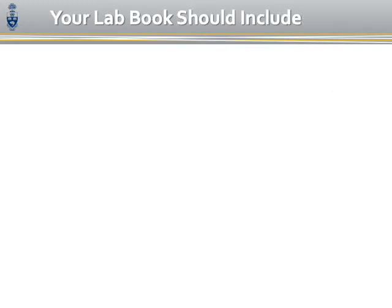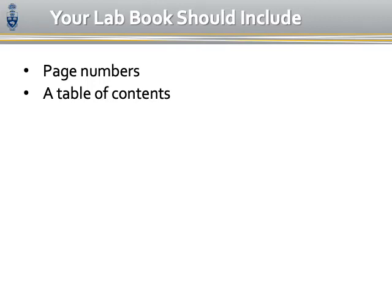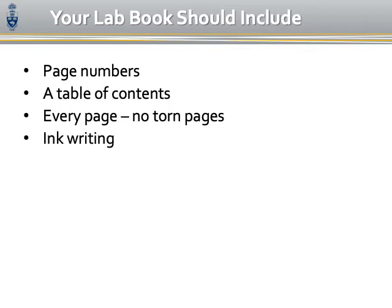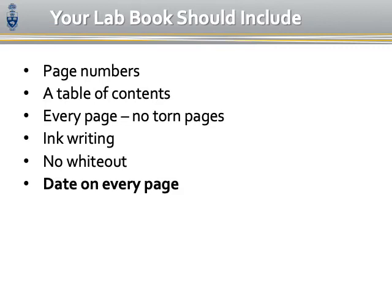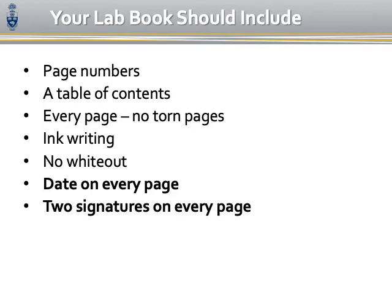What should your lab book include? First, there must be page numbers. If you buy a notebook without page numbers, write a number for every page. Leave a blank page at the beginning for a table of contents, which you can fill as you go. There are no torn or missing pages — every page should be intact. If you make a mistake, put a line through it. It must be written in ink with no white-out. There has to be a date on at least every page. On every page there should be two signatures: your signature and a witness who attests that these things were written in your notebook.